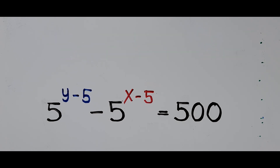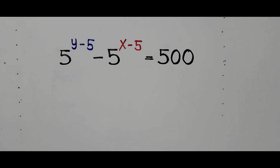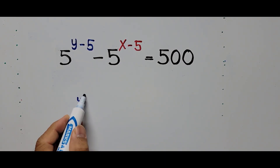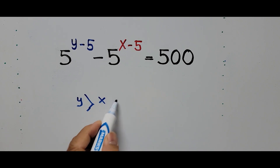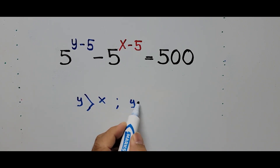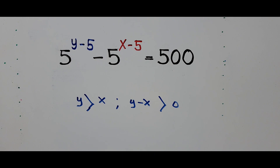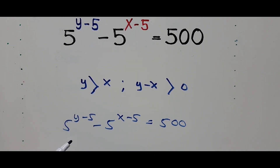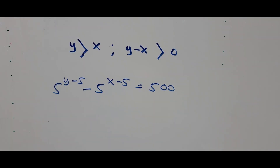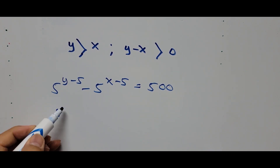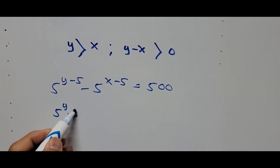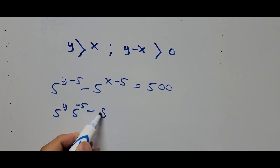For those new to my channel, please don't forget to like and subscribe for more videos. Now let's start solving the problem. Based on the equation, y must be greater than x, and y minus x must be greater than 0. The equation is 5 raised to the power of (y minus 5) minus 5 raised to the power of (x minus 5) equals 500. The first step is to simplify the left side: this becomes 5 raised to the y power times 5 raised to the power of negative 5.